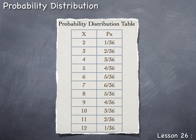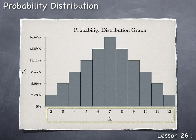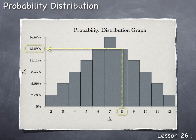Probability distributions can also be written in graphical form. The probability distribution graph for craps can be displayed as a histogram where the horizontal axis represents all possible values of X and the vertical axis represents the corresponding probabilities P(X). Probabilities can be shown in fraction, decimal, or percentage form. For instance, to find the probability of rolling an 8, find the bar corresponding to 8 and read its height.